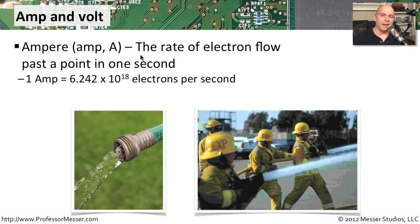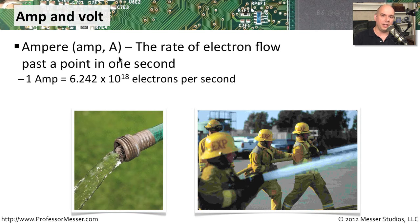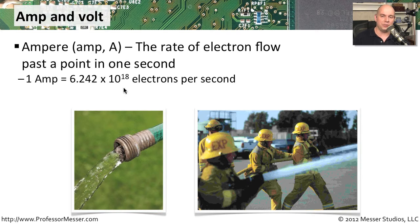As you start working with power supplies inside of your computer, there are a number of terms that will come up that you need to know about. One of those is the amp — the ampere, abbreviated with a capital A. This is the rate of electrons that can flow past a particular point in a single second: 6.242 times 10 to the 18th power electrons flowing through a single point, which equals one amp.